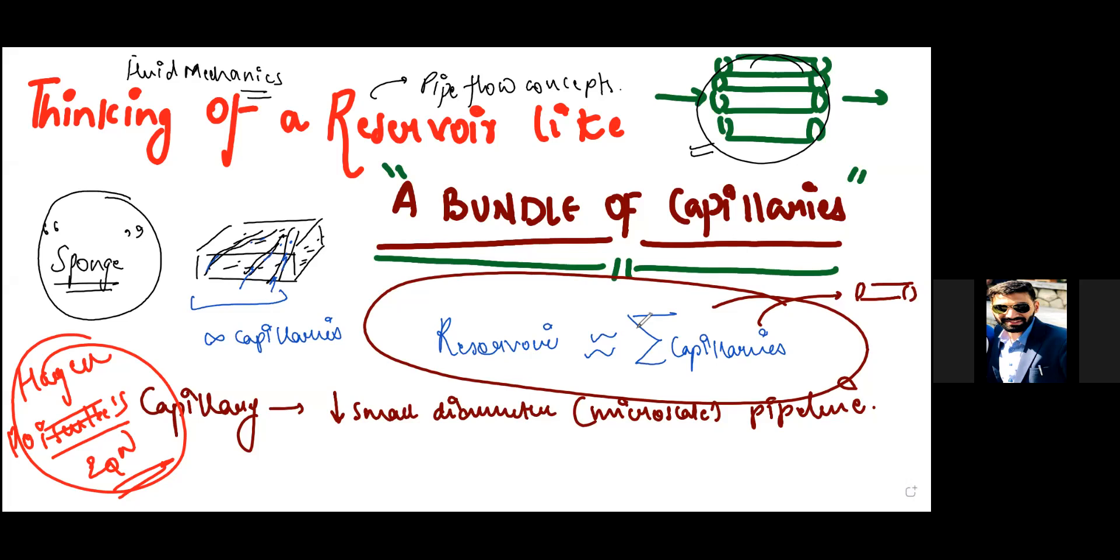Welcome back guys. In the last session we talked about the background behind what we are going to discuss here. It's the Hagen-Poiseuille equation that we'll be deriving. We talked about how a reservoir can be approximated as a bundle of capillaries and how we are going to derive for one capillary and then for a bundle and then approximate it with Darcy's law.